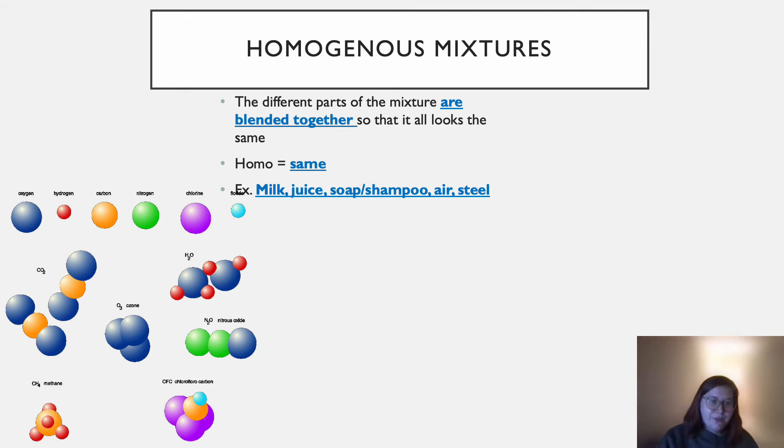and fluorine. But you also have some molecules. So things like carbon dioxide, CO2, or ozone, or water. There's lots of different types of gases that go into air, but we can't see different pieces of the air. So that's one example.